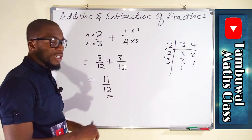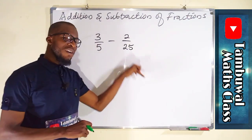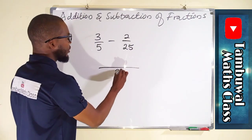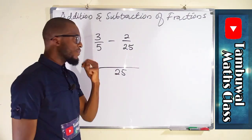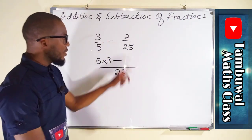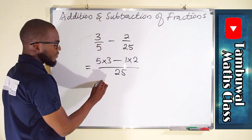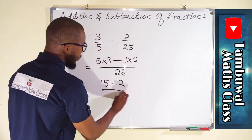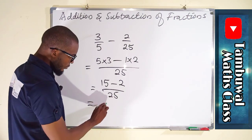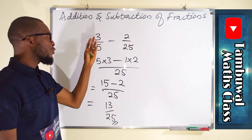Now let us test subtraction. We are subtracting 2 over 25 from 3 over 5. The LCM of 5 and 25 is 25, because both 5 and 25 can go into 25 without remainder. 5 can go into 25 five times, so multiply the numerator 3 by 5 to get 15. Drop the minus sign. 25 goes into 25 one time, so multiply the numerator 2 by 1. We get 15 minus 2 is 13, all over 25.